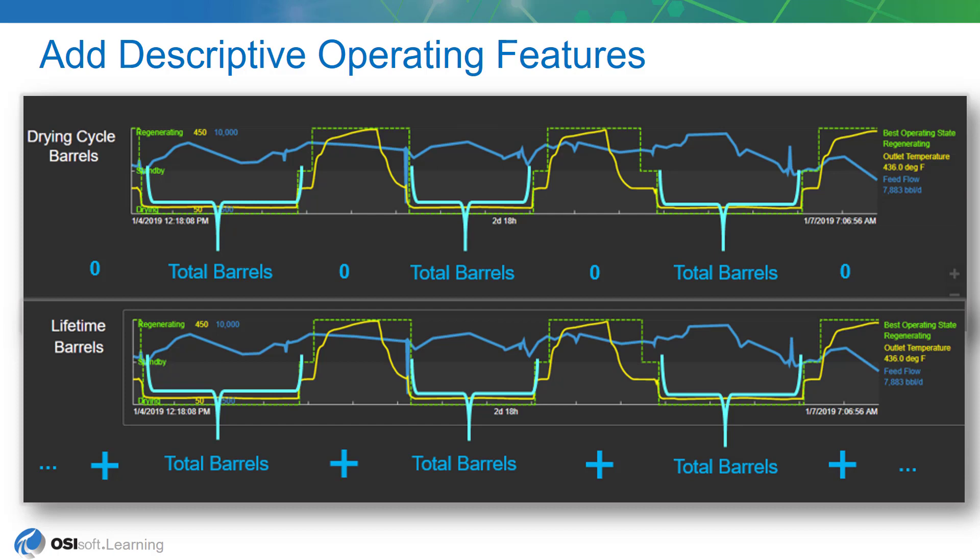We're going to be calculating two descriptive operating features. First, drying cycle barrels, which is the total number of barrels that a dryer sees during each drying state or each drying cycle. We're going to be looking at the feed rate, which is in units of barrels per day, and converting it to total barrels using a function in ACID Analytics.